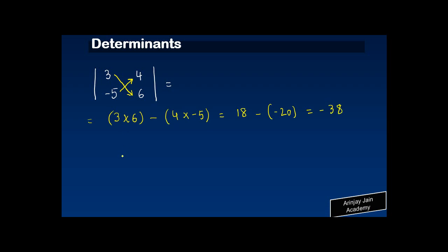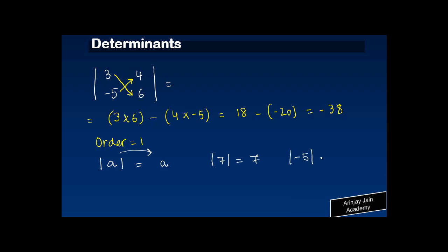Now this was about the value of a determinant of order two. What if the order of a determinant is equal to one? If I tell you to calculate the value of determinant A, the value of the determinant will be A itself. So the value of determinant seven is seven, and the value of determinant minus five is five.